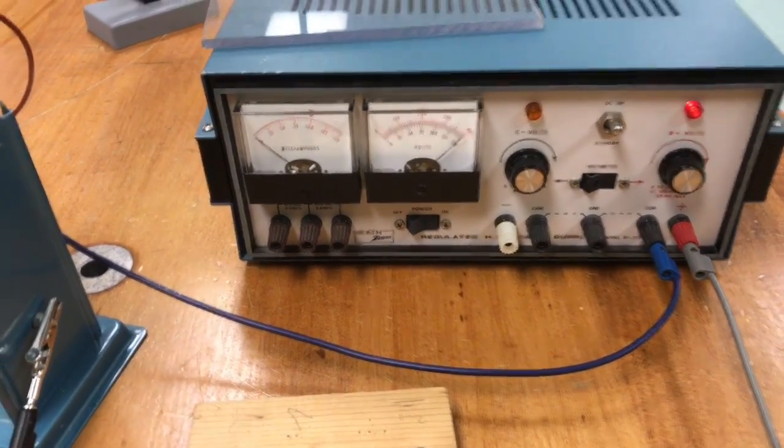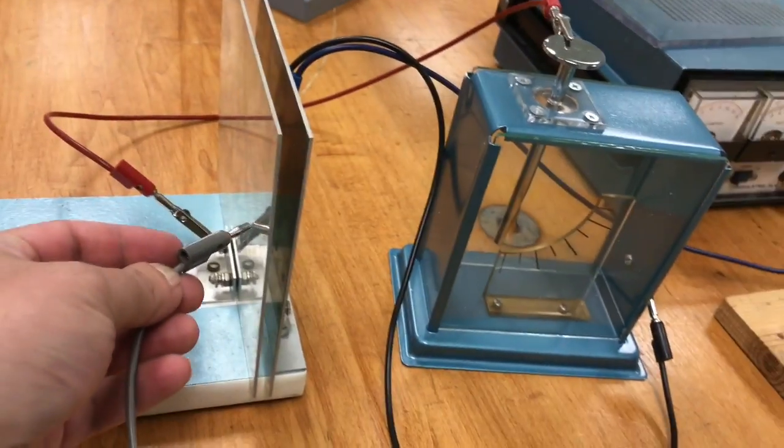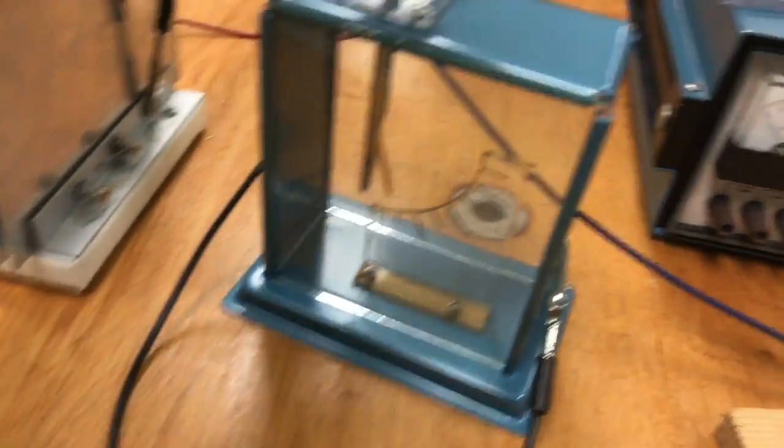Again we're nearly at 400 volts. We need to apply a charge. Now the leaf is up on our electroscope.